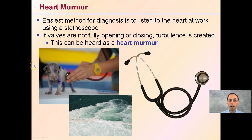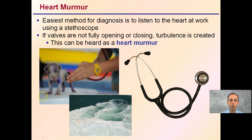A heart murmur — the easiest method for diagnosis is to listen with a stethoscope. If valves are not fully opening or closing, turbulence gets created, and this is called a heart murmur. Typically this is done on newborns and young individuals: we listen for that distinct lub-dub, and if that murmur is causing turbulence, it could indicate a problem with one of the valves either not fully opening or not fully closing.